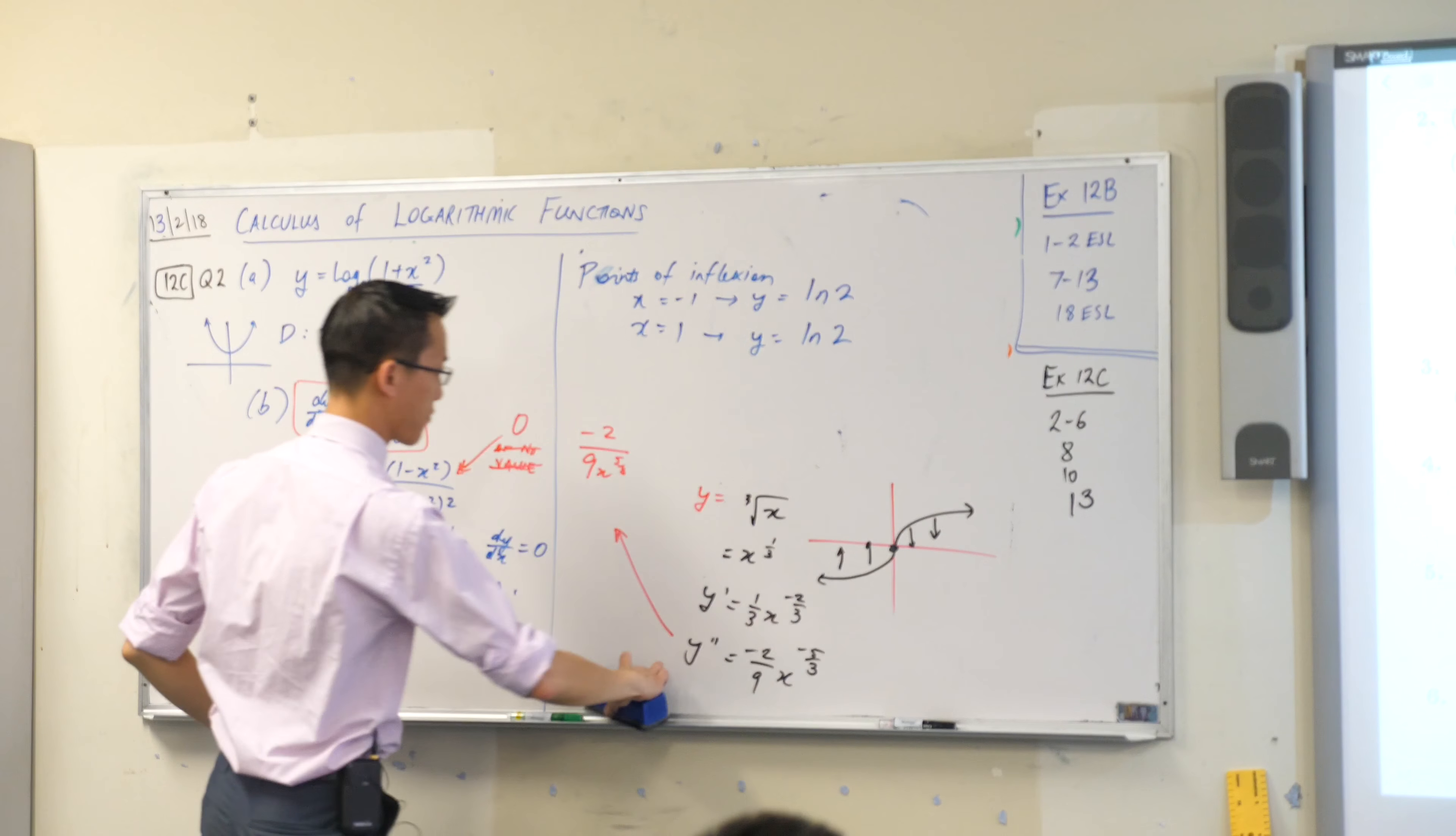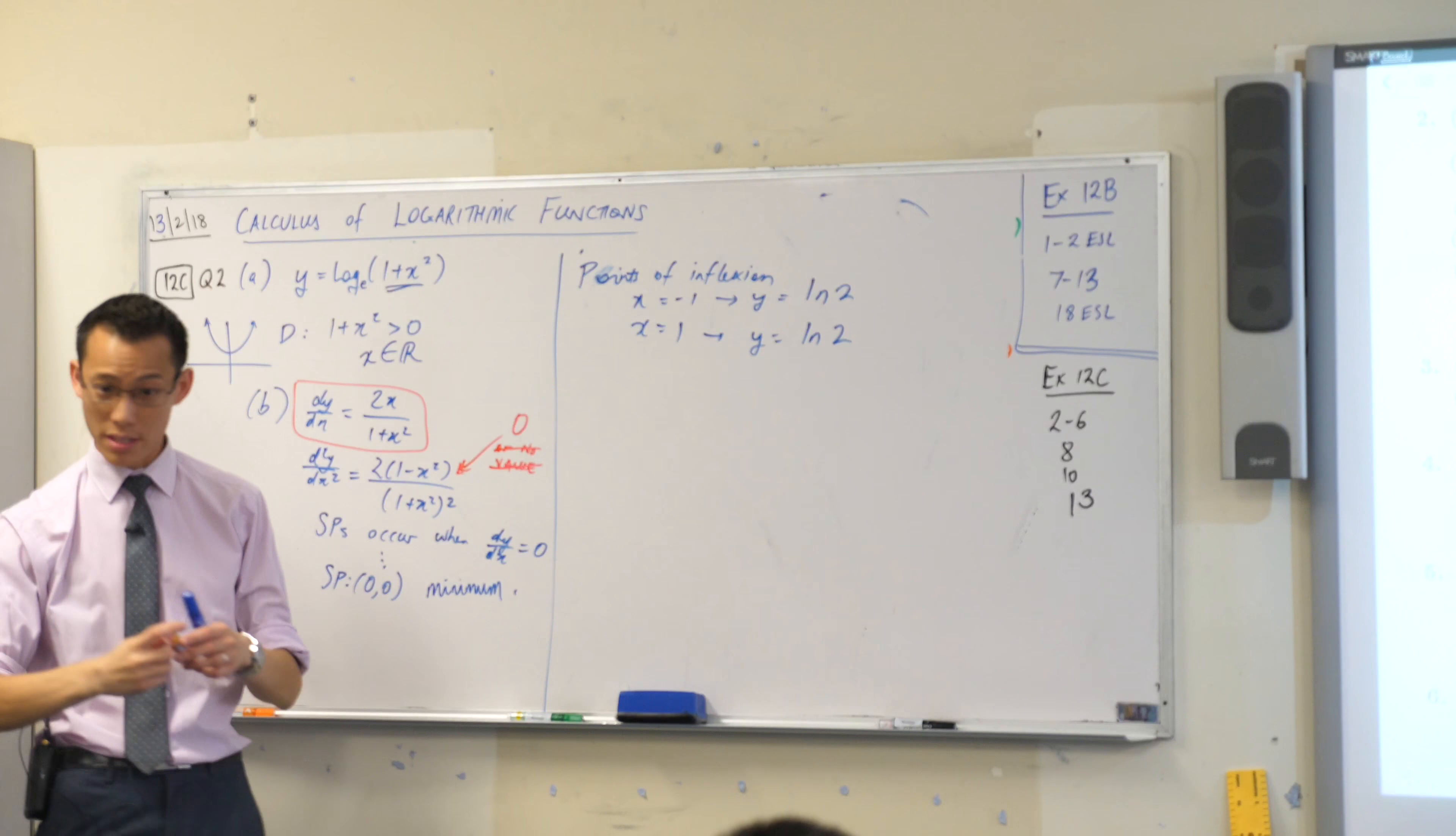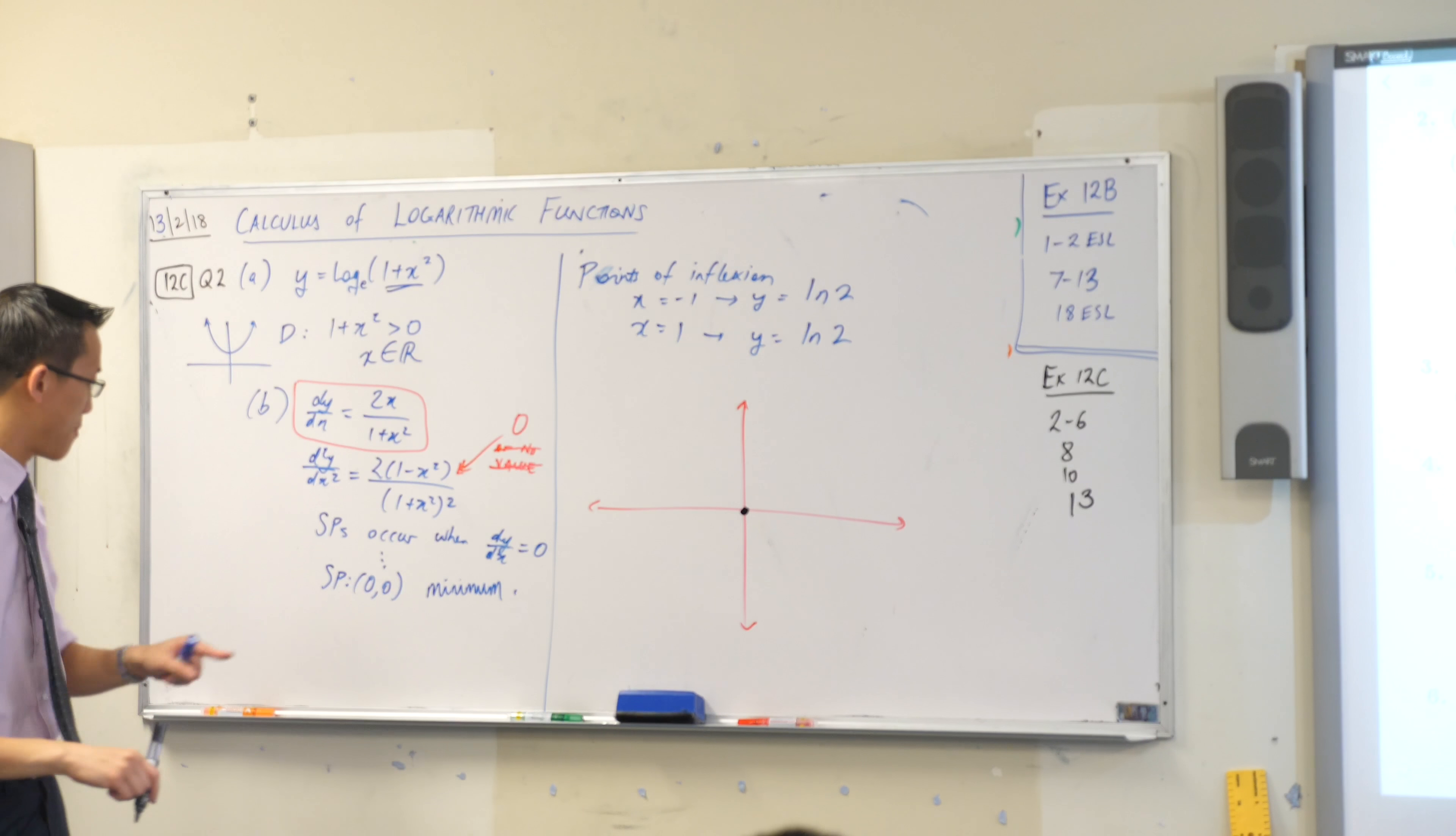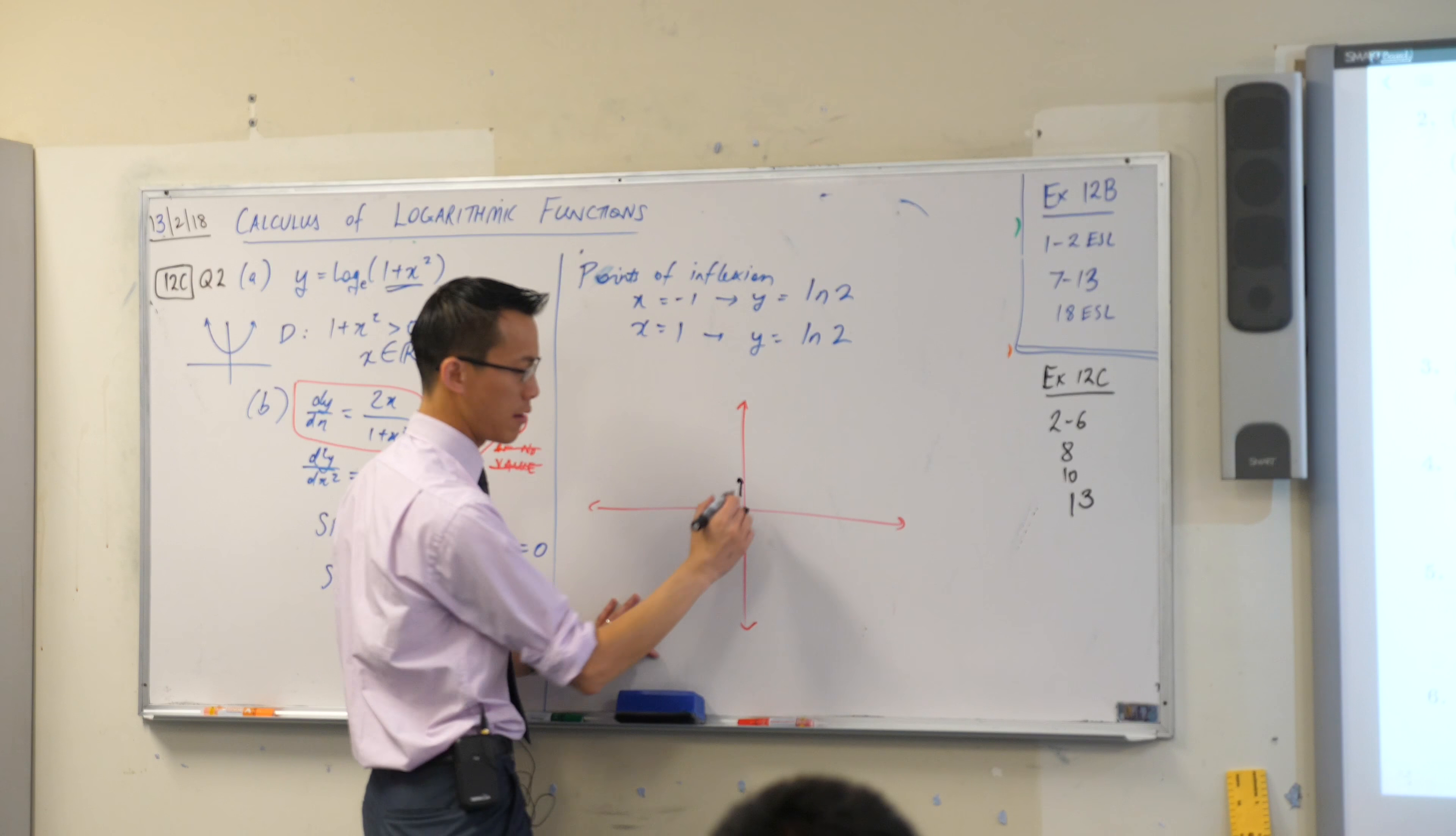Now I'm ready to sketch the curve. I've got a stationary point. If you haven't already, get your set of axes and pop your stationary point on there. Now, at that point, because it's a minimum, which you guys found earlier, I know it's going to be concave up, right? So I'm going to have something facing upward at this point.